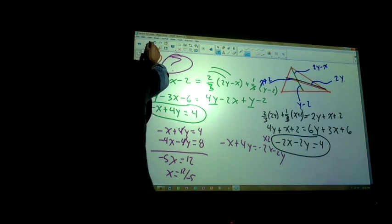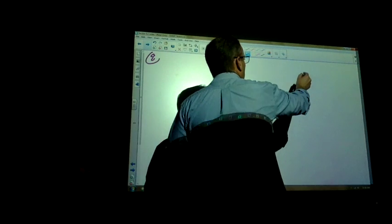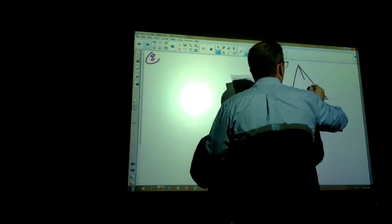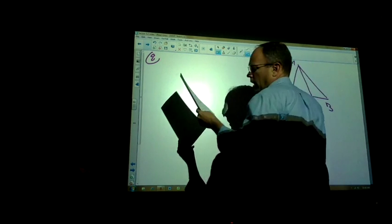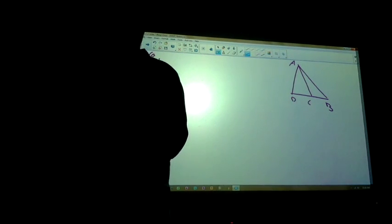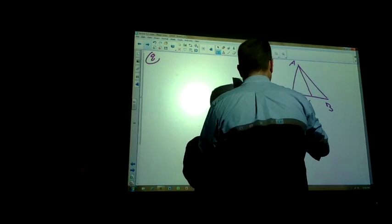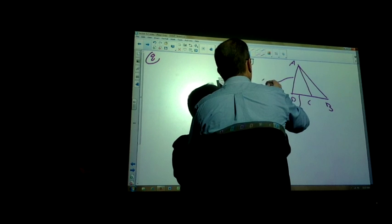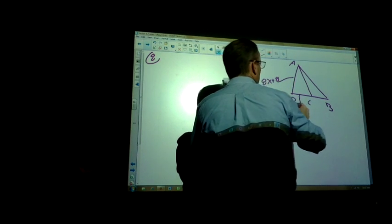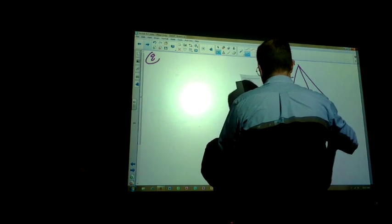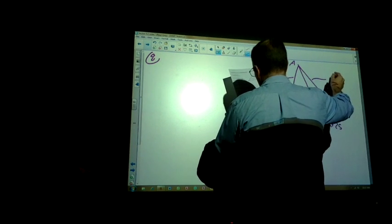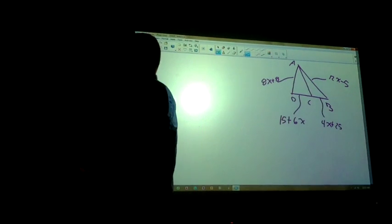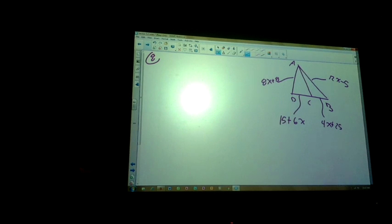Number 8. DC, B, I. Alright. AC is the median. Good, it cuts it in half. CD is, so this distance here is 15 plus 6x. And DA is 8x plus 8. And BC, that right there is 4x plus 25. And AB is 12x minus 5. Find the perimeter. Oh my. Okay. So if we find the perimeter, we have to solve for x somehow.